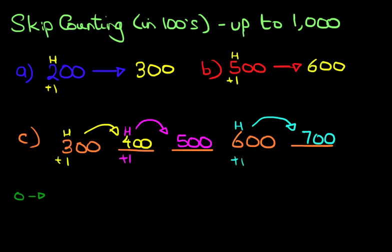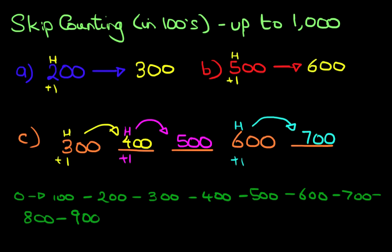We've got 0, 100, I'll double and write the arrows, 200, 300, 400, 500, 600, 700, we'll keep going, 800, 900, and 1000.